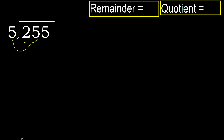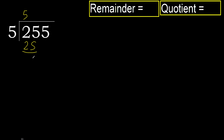25 is not less, therefore work with 25. 5 multiplied by which number is nearest to 25, but not greater? 5 multiplied by 6 is greater. Multiplied by 5 — 25 is not greater. Ok. 25 minus 25 is 0. Next.